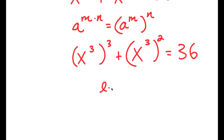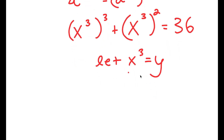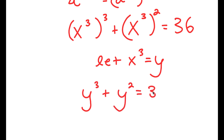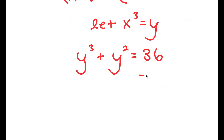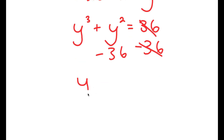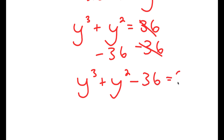Now I'm going to let x to the power of 3 equal to the variable y. So if I substitute in y for x to the power of 3, I get y to the power of 3 plus y squared is equal to 36. And if I subtract 36 on both sides, I get y to the power of 3 plus y squared minus 36 is equal to 0.